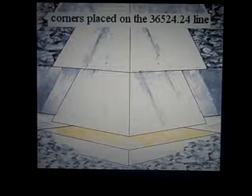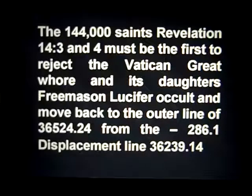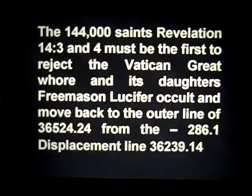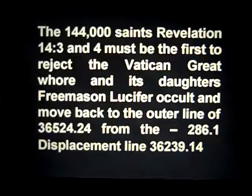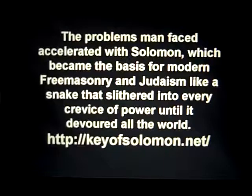There is a drawing showing how the corners with the saints moved out to join the corners at the fullness of the full-size base of 36,524.24. Reiterating: the 144,000 saints are the first to reject the Vatican great whore and all of its daughters, which are the Freemason Lucifer churches — and there are something like 34,000 Christian denominations in the world now.